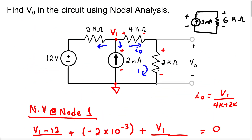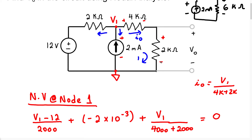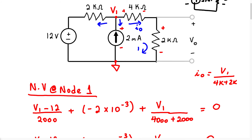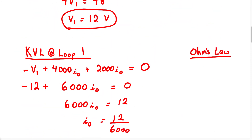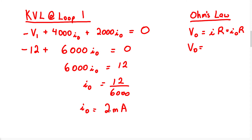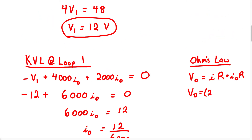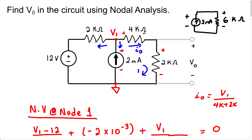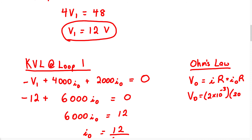We now know the current flowing through these two resistors. To find the voltage VO, we use Ohm's law: VO equals I0 times the 2K resistor. We just found I0 equals 2 milliamps, so we have 2 times 10 to the negative 3, multiplied by 2,000. Therefore VO equals 4 volts — the voltage at that 2K resistor.